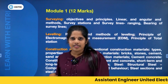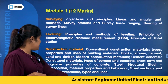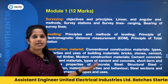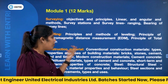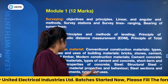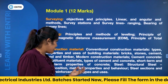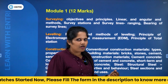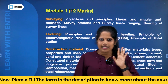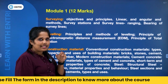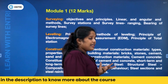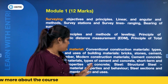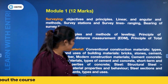Construction materials — conventional construction materials: properties and uses. Building materials include bricks, stones, cement, and timber. Modern construction materials: cement concrete, types of cement concrete, short-term and long-term properties of concrete including elasticity. Then structural steel — composition, properties, behavior, steel sections, and steel reinforcement types and uses.